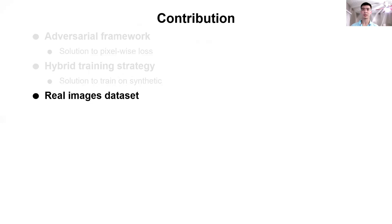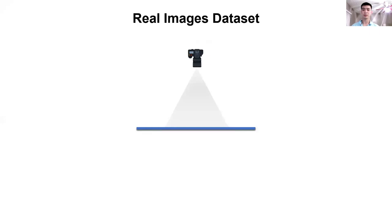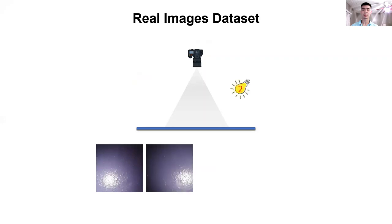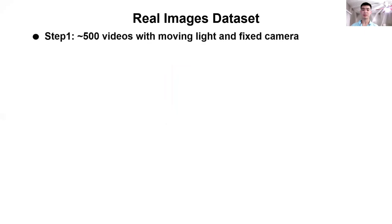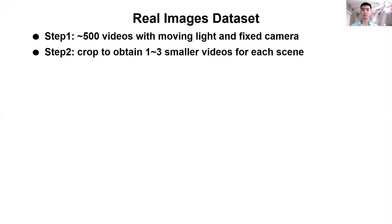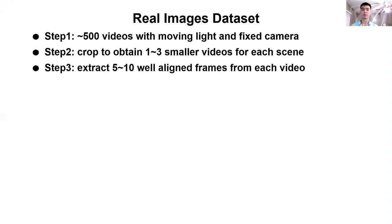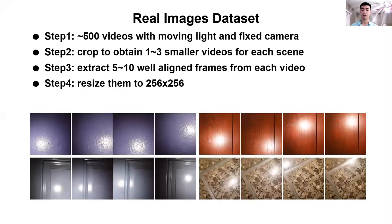Now I will talk about our real images dataset. To capture real images of the same scene with different lighting, we firstly set up a fixed camera facing our target planar surface. We then move a flashlight and capture a series of images. In this way, we obtain around 500 videos of different scenes. We crop each video to obtain 1 to 3 cropped videos with smaller resolution containing reasonable lighting information. We then extract 5 to 10 frames from each cropped video and resize each extracted frame to 256 by 256. Our real dataset is diverse and helpful for training the network on real images.